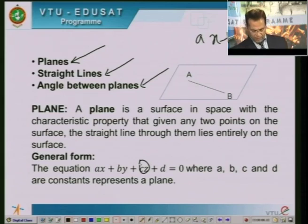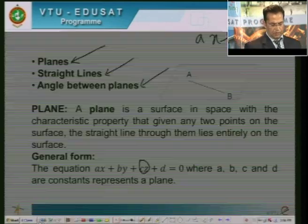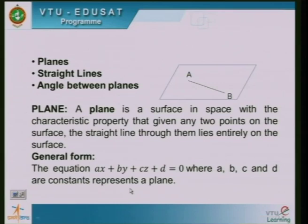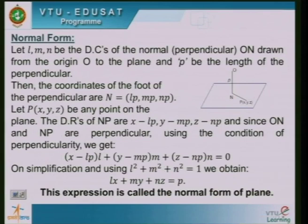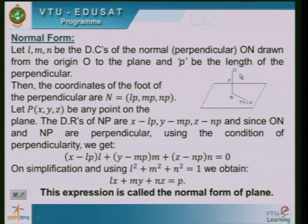There are various forms of a plane. The first one is known as the normal form. In the initial part of solid geometry, you need to know the concepts of direction cosines and direction ratios as prerequisites. To derive the normal form of the plane, let LMN be the direction cosines of the normal, or the perpendicular ON drawn to the plane.